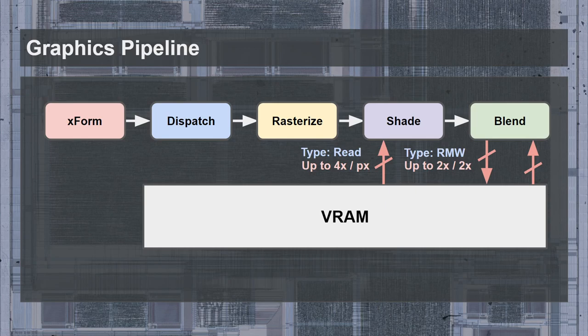This type of access is called read-modify-write. One thing that can simplify the access pattern for the blend stage is that the depth and color buffers can be interleaved, which reduces the accesses to one read-modify-write operation. This doesn't look too bad until we realize that this setup requires five read ports and one write port to the VRAM. Not only would that have been incredibly expensive in the 1990s, but it's even impractical today. Furthermore, this is for just one pixel pipeline, where this number scales up for every additional pipeline you add. And even worse, if any one of these transactions fails to complete at a rate of one every cycle, then the entire pipeline will grind to a halt.